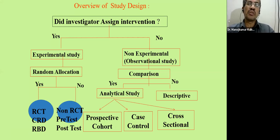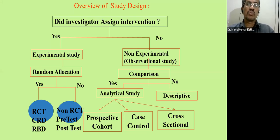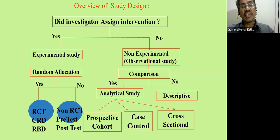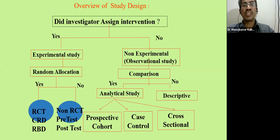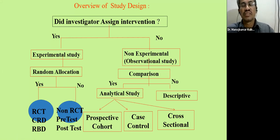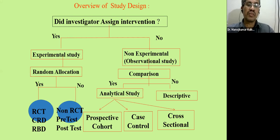When we come to experimental study, there is an intervention, which requires more than one group. When we allocate subjects to different groups, we consider whether allocation is random. If randomly allocated, it is called a randomized controlled trial or completely randomized design. Non-random allocation — for example pre-test post-test — involves selecting one group, making measurement before intervention, then making measurement after intervention, and evaluating the effectiveness of the intervention based on this difference.